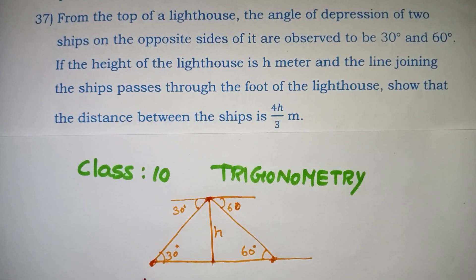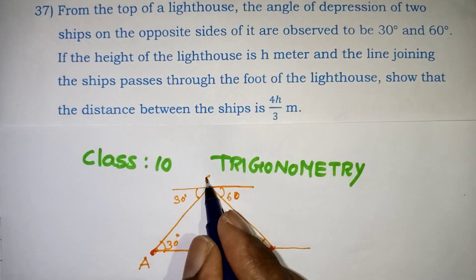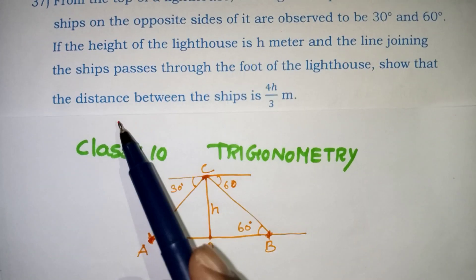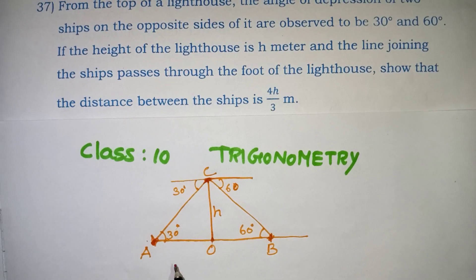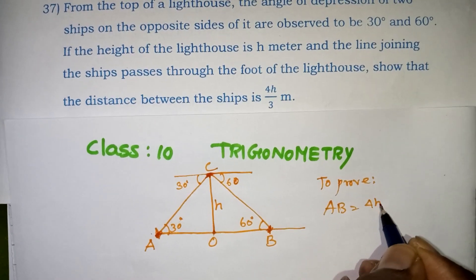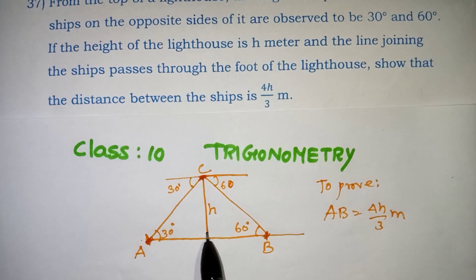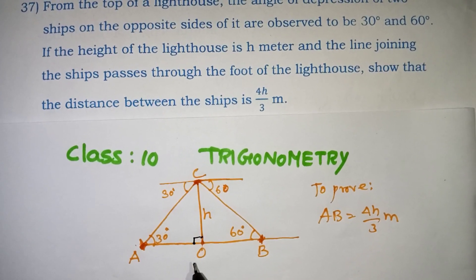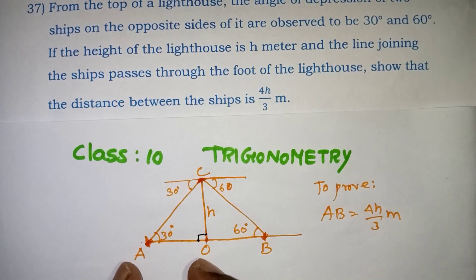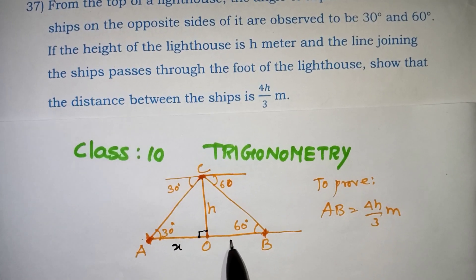If you look at the first ship, its position is A, and the second ship is B. The lighthouse base is O and the top is C. AO is the distance x, and OB is the distance y. Since AB is split into two parts, AB equals AO plus OB, which means AB equals x plus y.